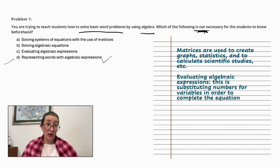C. Evaluating algebraic expressions. This is something they ought to know before. This is substituting numbers for variables in order to complete the equation. So it would be key in learning how to solve basic word problems.